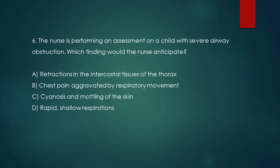Question 6. The nurse is performing an assessment on a child with severe airway obstruction. Which finding would the nurse anticipate? A. Retractions in the intercostal tissues of the thorax. B. Chest pain aggravated by respiratory movement. C. Cyanosis and mottling of the skin. D. Rapid, shallow respirations.